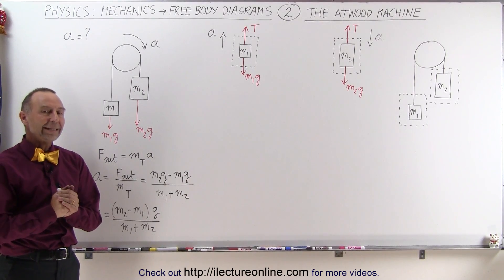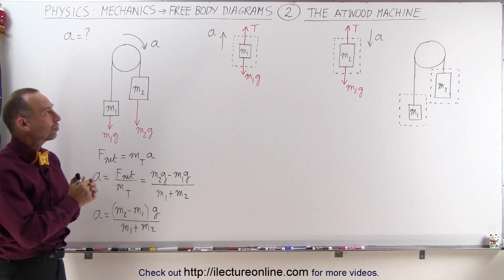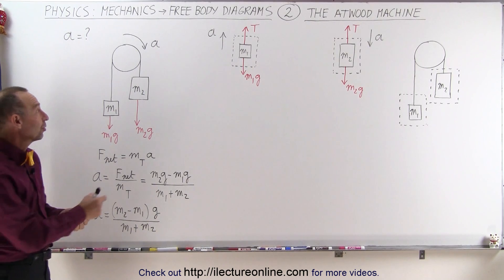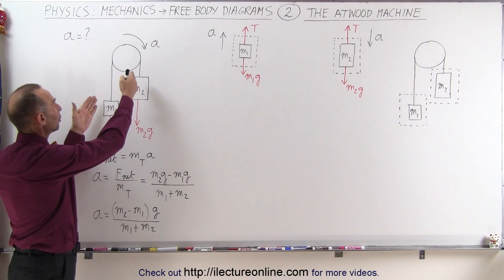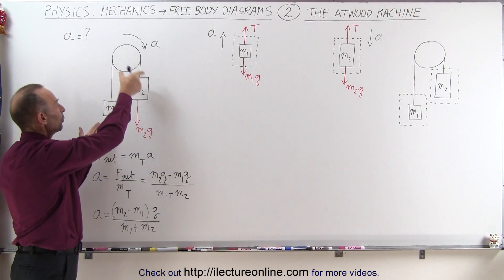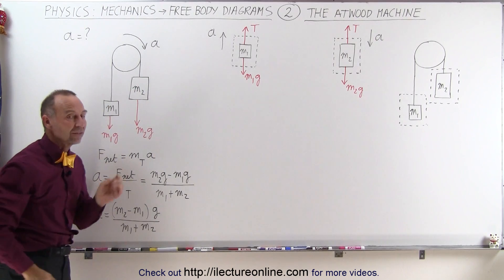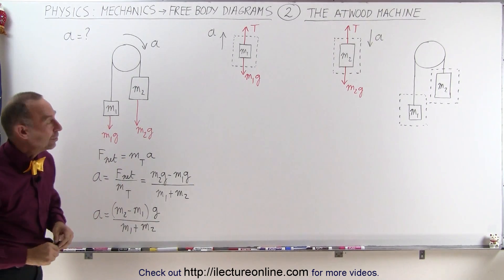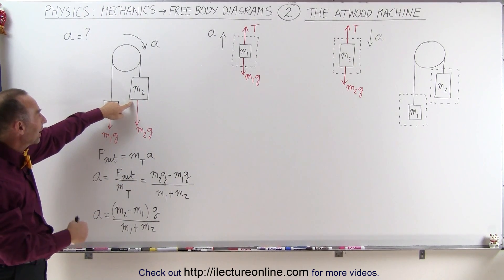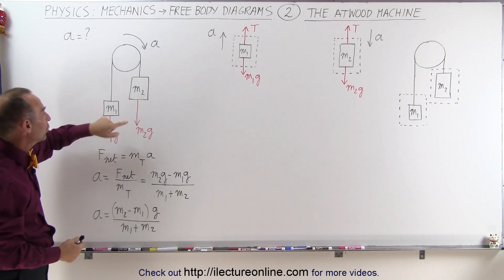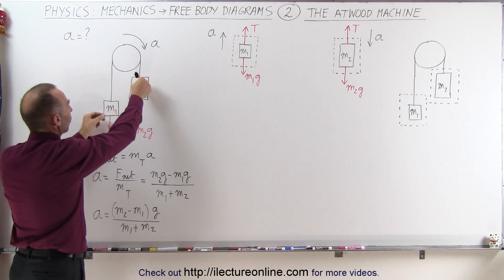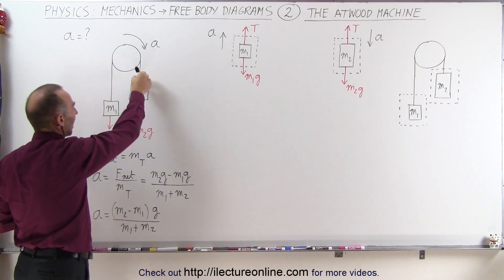Welcome to Electron Line. Here we're going to solve the problem of the Atwood machine, which is simply a pulley with two masses hanging together on the same string, one mass on each side. You can assume that the mass that's heavier — in this case M2 — will cause the whole system to accelerate.